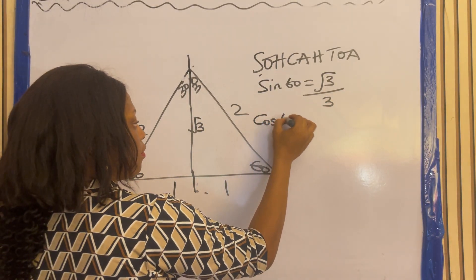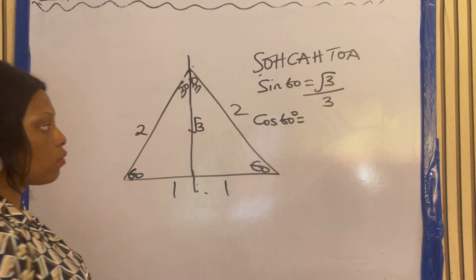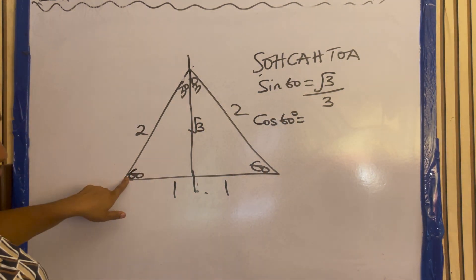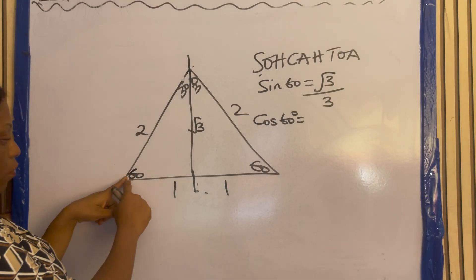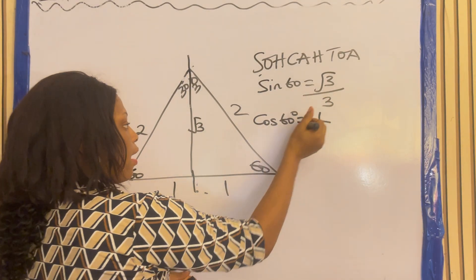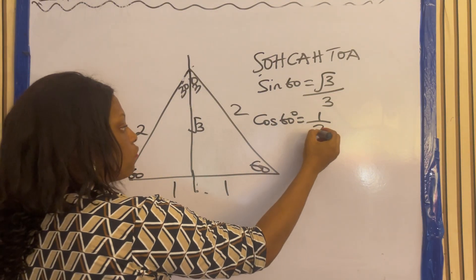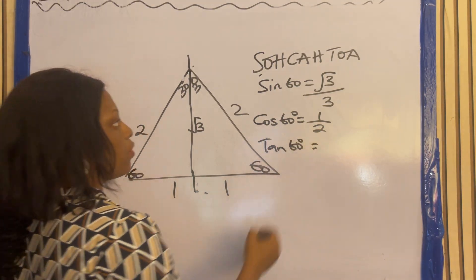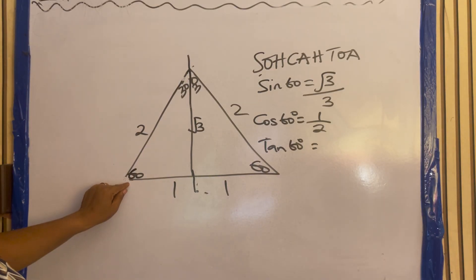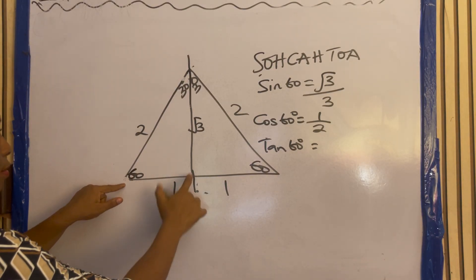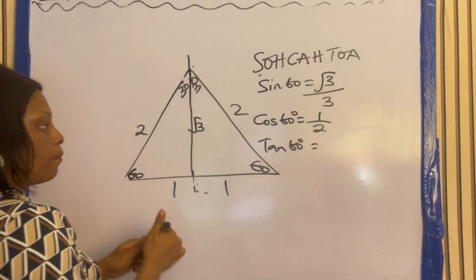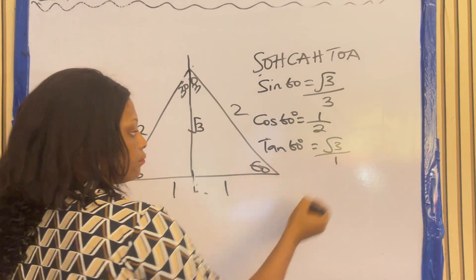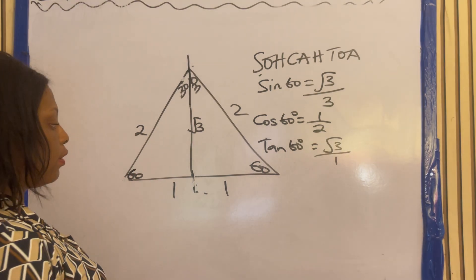Then cos 60. Cosine is adjacent over hypotenuse. Looking at 60°, the adjacent is where the angle is lying, which is 1. Hypotenuse is 2. So cos 60 is 1 over 2. Then tan 60 — tan is opposite over adjacent. Looking at 60°, the adjacent is 1 here, and the opposite is root 3 here. So tan 60 is root 3 over 1.